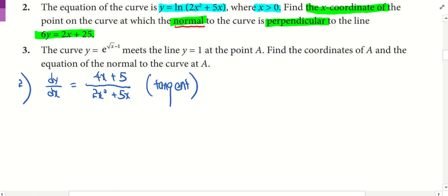But what did they say? They say the normal is perpendicular to that line. But is the line in the form that you want? Is the line very easy for you to see what is the gradient? No. Then can we rearrange? Can you do it now?